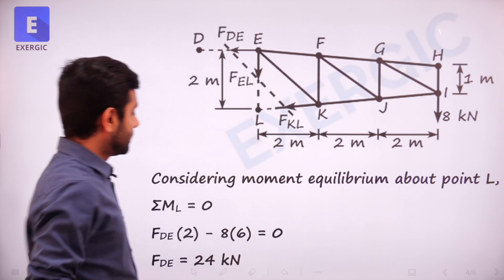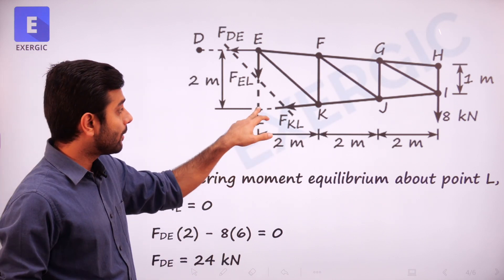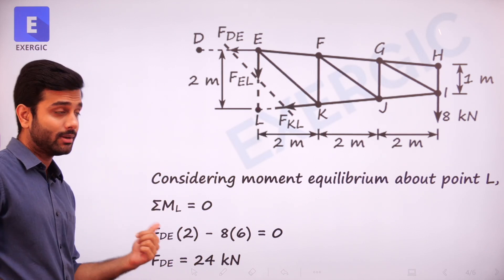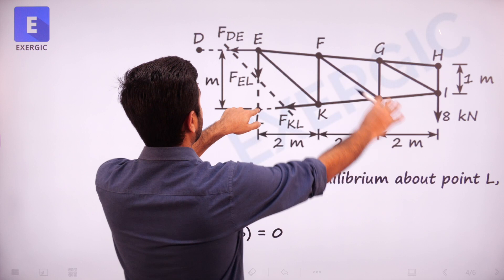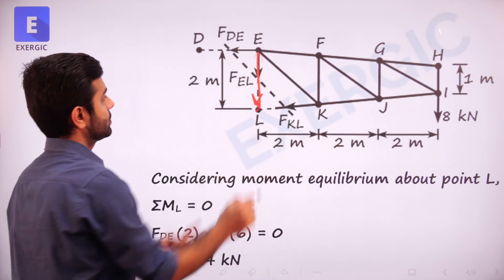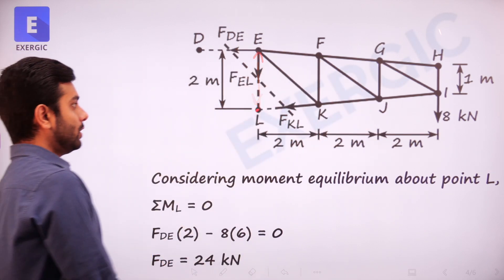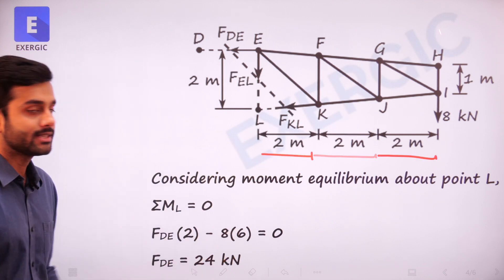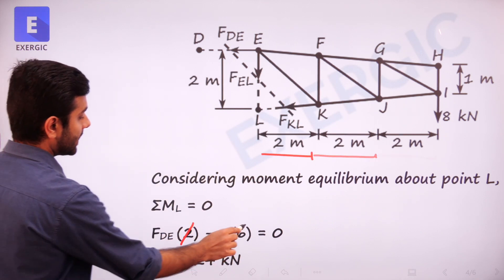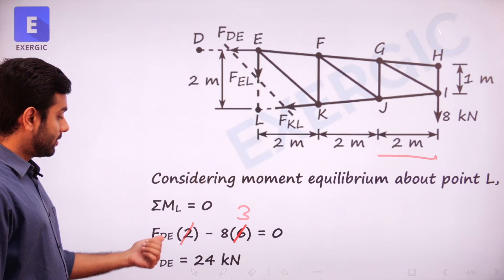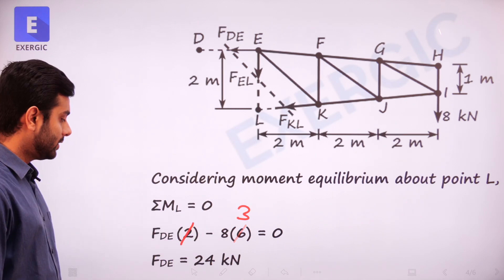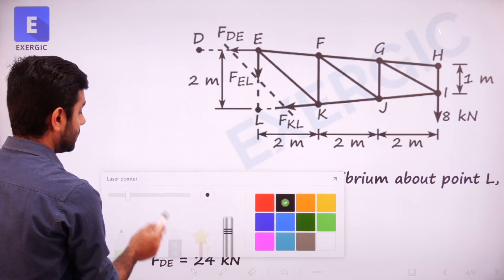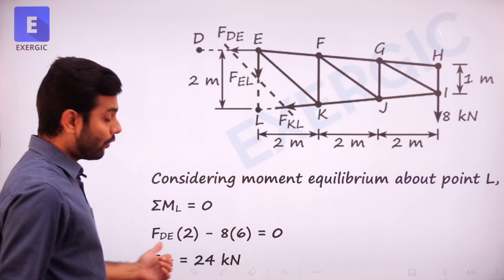Considering moment equilibrium about point L: summation of moment about L = 0 gives FDE × 2 = 8 kN × (2 + 2 + 2). That is FDE × 2 = 8 × 6 = 48. So FDE = 24 kilonewton. We have found the force in DE.